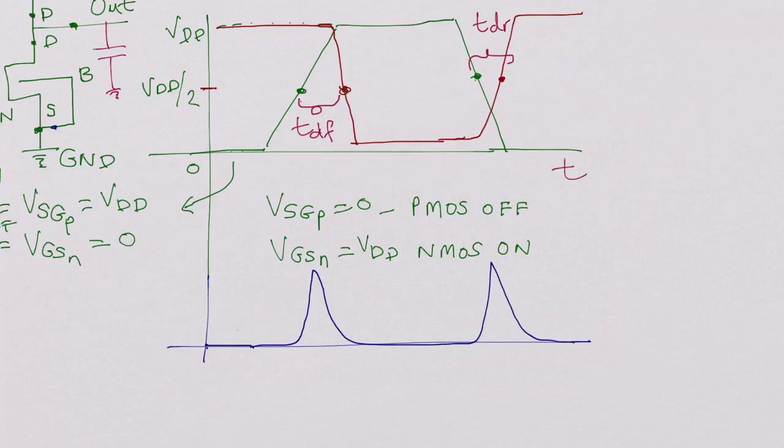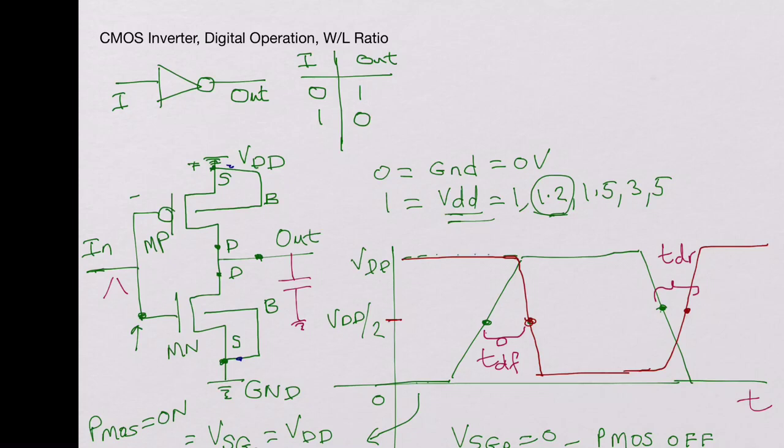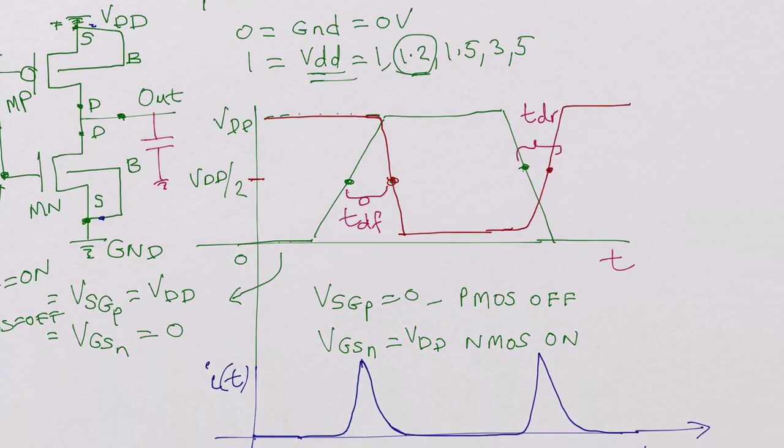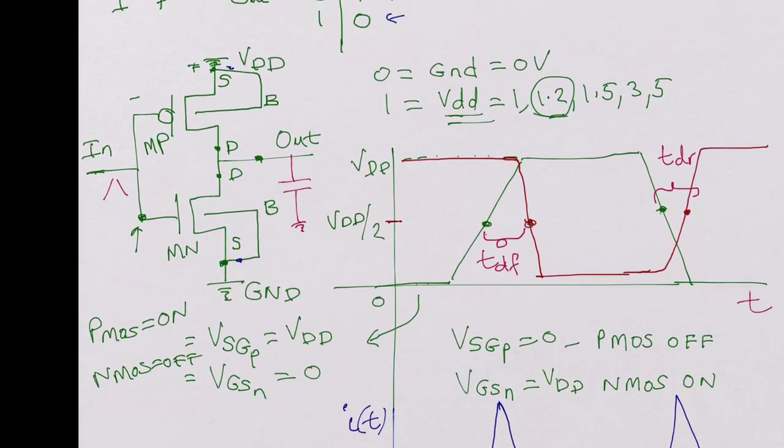And then there will be a current flow again when switching back. So when the output goes from VDD to ground, there is a current flow. This is I of T with respect to time here. So this is more of an analog point of view. But otherwise, steady state is when the input is at ground, output will be VDD. And the input is at VDD, the output will be at ground. That is the steady state. That is how the CMOS inverter operates.